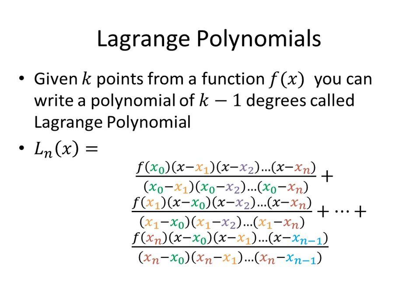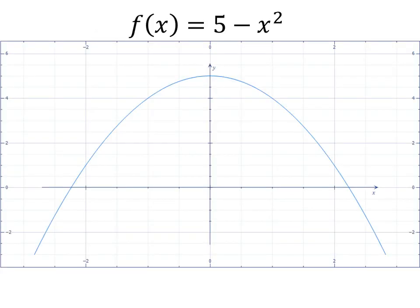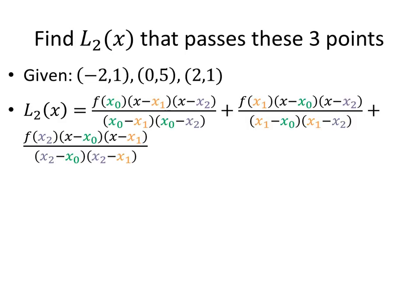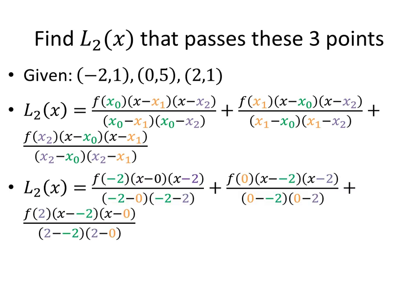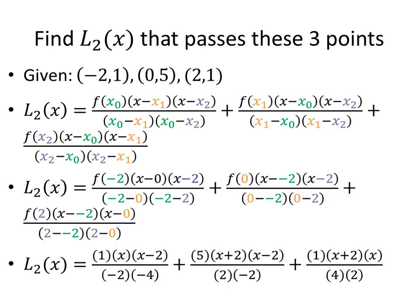We'll try it with another example. In this case we're given an actual function, but we're pretending like we don't know what the function is, and we'll have three points from that function. So given those three points, we'll plug them into our Lagrange polynomial form to come up with this equation, which we can simplify further.